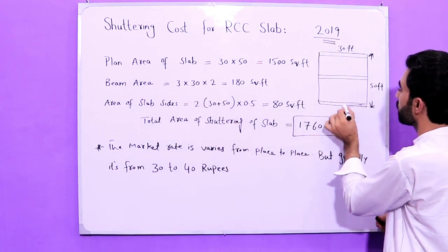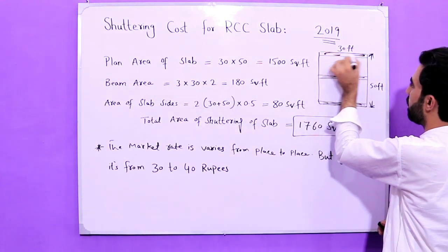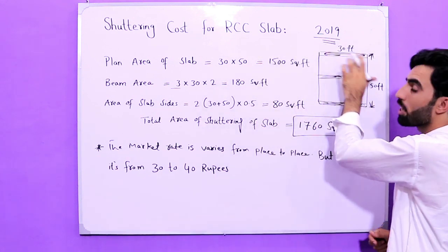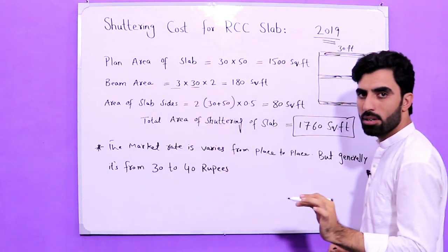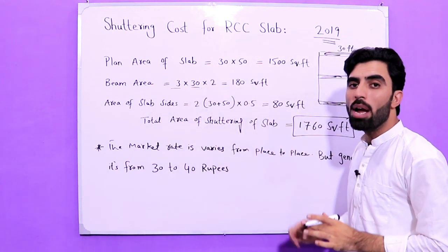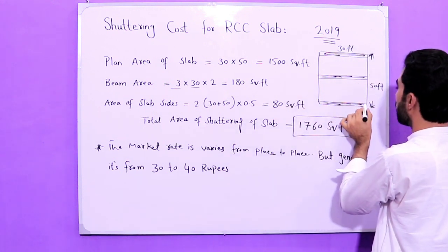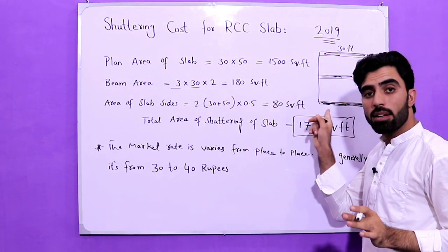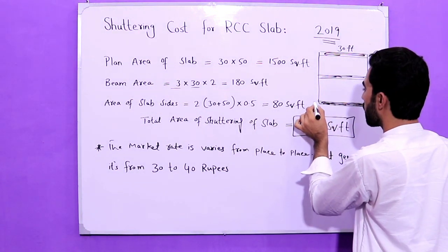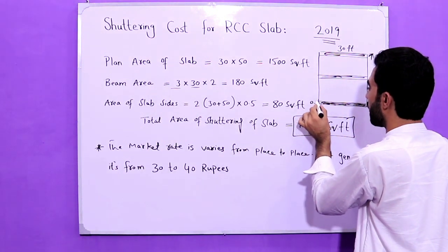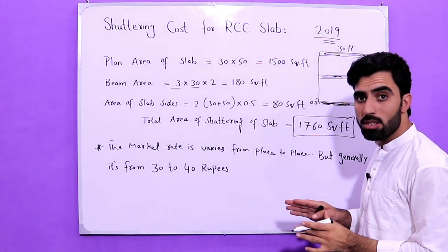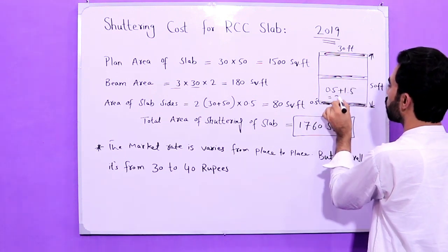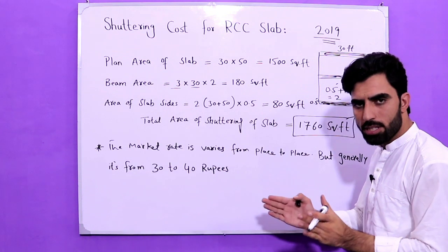Now, how do we find beam area for shuttering? As you can see, there are three beams here. These three beams run along the short direction, which is 30 feet — so 30 feet is the length of each beam. The width of this beam is 0.5 feet (6 inches) and its depth is 1.5 feet.